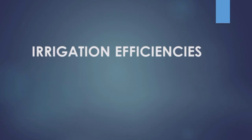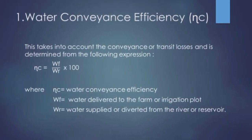Next we move on to irrigation efficiencies — approximately six efficiency factors used to study how efficiently water is supplied and used. The first is water conveyance efficiency. Read the title carefully and you can understand the equation: it checks how efficiently water is conveyed from the reservoir to the farm. The equation is water delivered to the farm divided by water supplied from the reservoir.